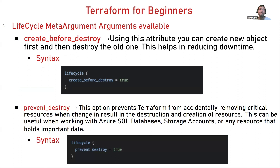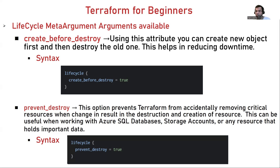The first is create_before_destroy. Using this attribute, you can create the new object first and then destroy the old one, which helps in reducing downtime. For example, if you defined an EC2 instance with instance type T2.micro and later want to change it to C1.micro, you use this lifecycle argument. When you execute Terraform plan, it will show it's going to create C1.micro first and then destroy the T2.micro instance — that's how you handle resource creation and destruction behavior.